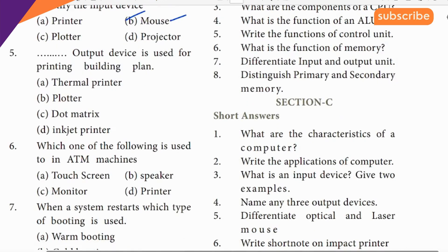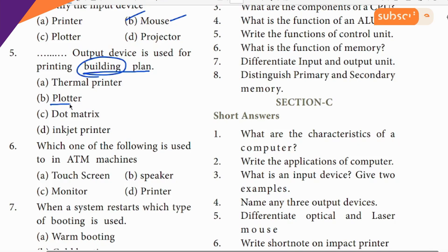Fifth question: building plan. The clue is building plan — the answer is plotter. Option B.